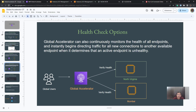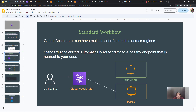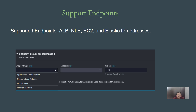Global Accelerator not only allows traffic to flow through the AWS global network which is congestion-free, it also sends requests to the healthy endpoint nearest to the user and performs health checks. Global Accelerator supports various kinds of endpoints — for example, it supports the Application Load Balancer, Network Load Balancer, EC2 instances, and Elastic IP addresses as endpoints. For today's video we took a demo of EC2 instances, but you can also use ALBs, NLBs, and EIPs.